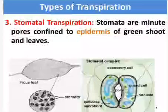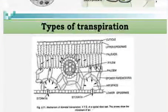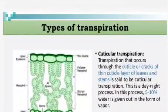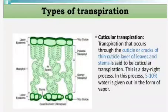In most dicot plants, stomata are present on the lower surface. The stomatal complex consists of the central pore, guard cells, and subsidiary cells. In the leaf, the upper epidermis has cuticle and the lower epidermis has stomata through which transpiration occurs. The green colored area on the upper side is the cutin deposition, forming the cuticle layer.